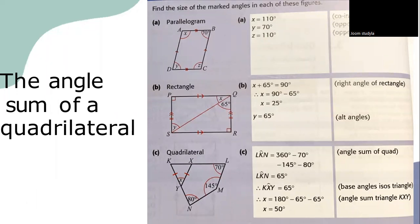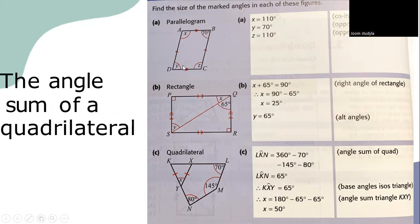Example: find the size of the marked angle. For the parallelogram, given B = 70 degrees — since Y is the opposite angle, Y = 70 degrees. To find Z: Y + Z = 180 degrees, so Z = 110 degrees. For the rectangle, given X + 65 = 90 degrees, so X = 25 degrees. Since opposite angles in the triangle are equal, Y = 65 degrees, and X + Y = 90 confirms this, giving a triangle total of 180 degrees.